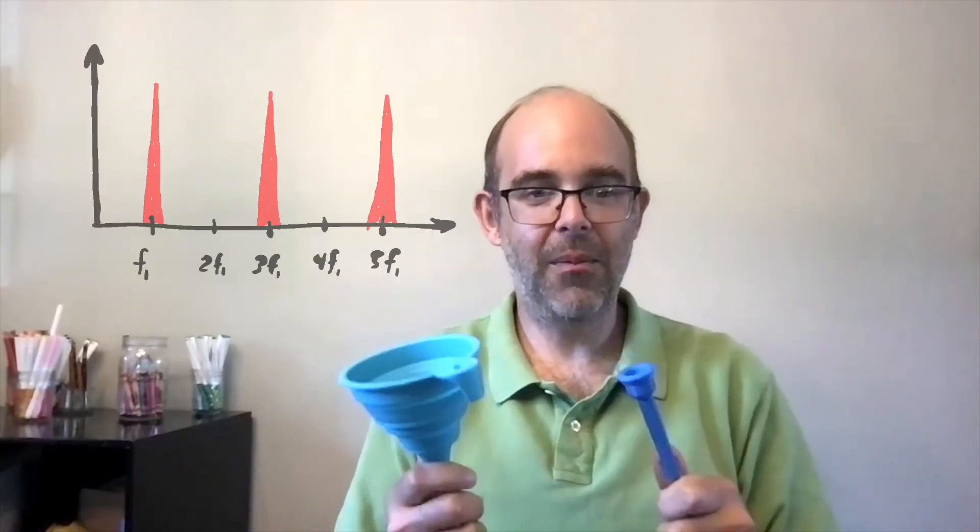Now we have an instrument. It turns out that by adding the mouthpiece and the bell, we have changed the resonances of the tube from only having odd harmonics into having both even and odd harmonics.